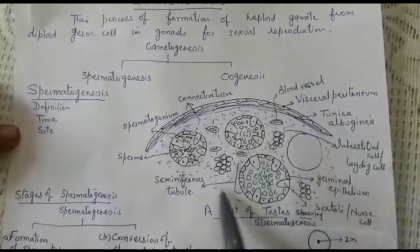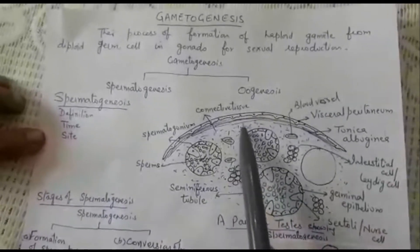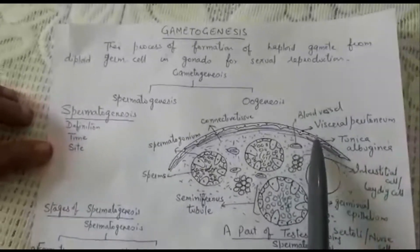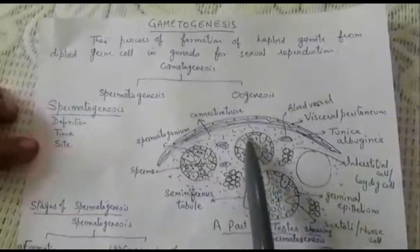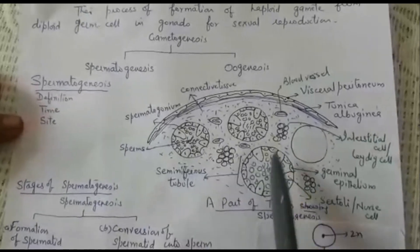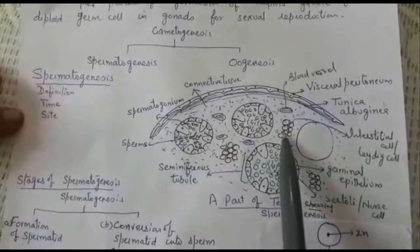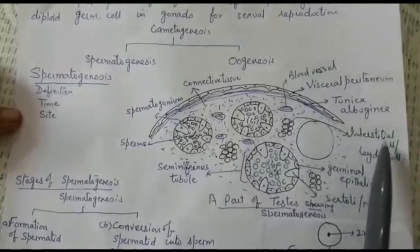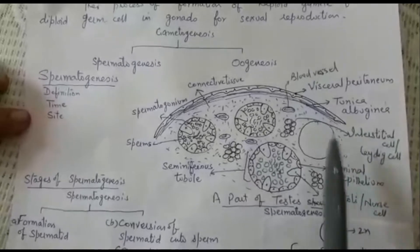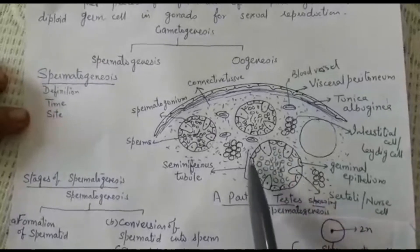The process occurs in testes. Here we have a part of the testes showing how spermatogenesis takes place. The testes are covered by a connective tissue sheet known as tunica albuginea, which is covered externally by visceral peritoneum. Within the testes there are a large number of seminiferous tubules, embedded in connective tissue. In between these seminiferous tubules there are masses of cells known as interstitial cells or Leydig cells, whose function is to produce testosterone.